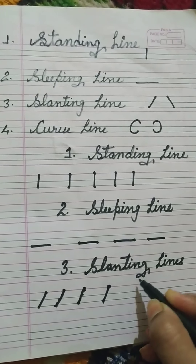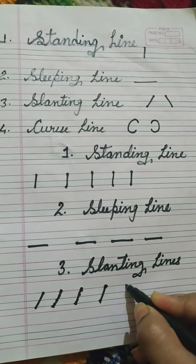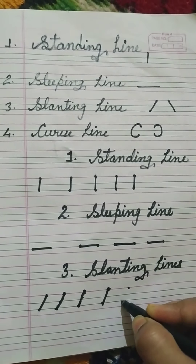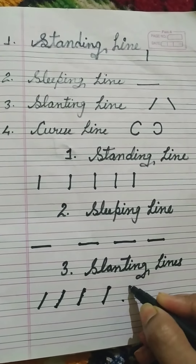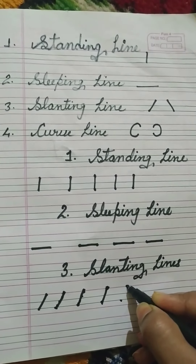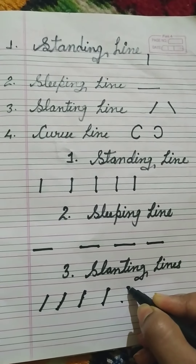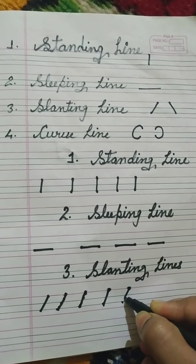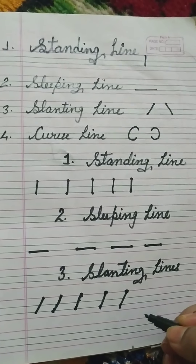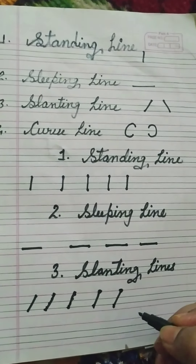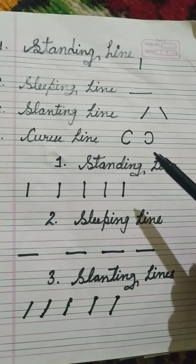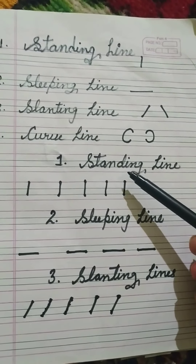Then join the dots. Put the dots and then join the dots from top to bottom like this. Okay, it's done — so we have completed standing line, sleeping line, and slanting line.